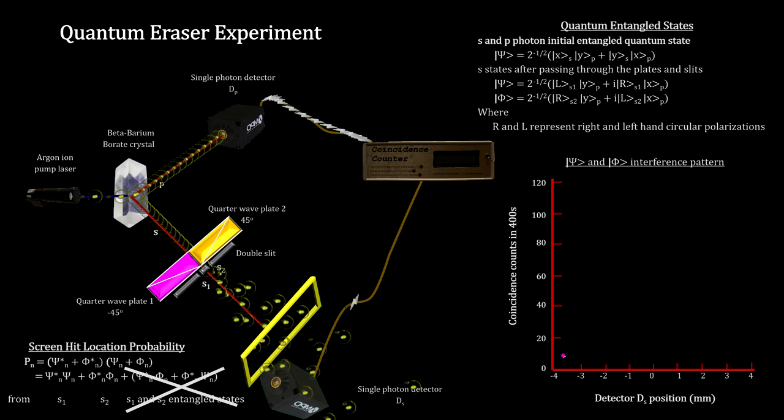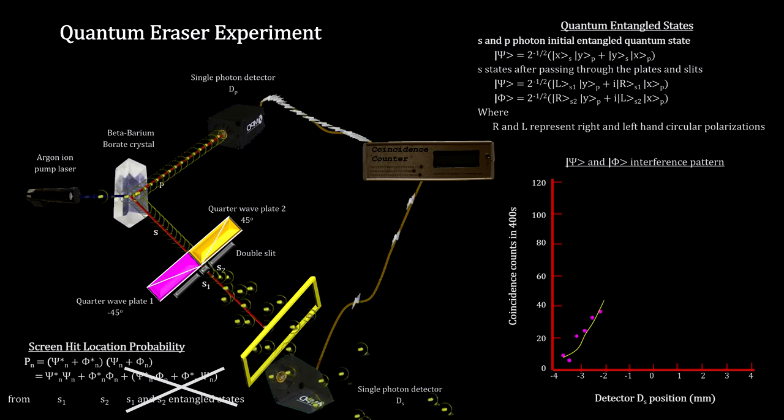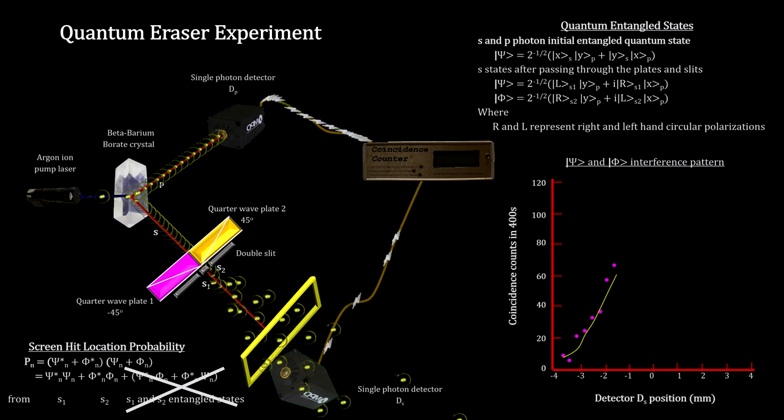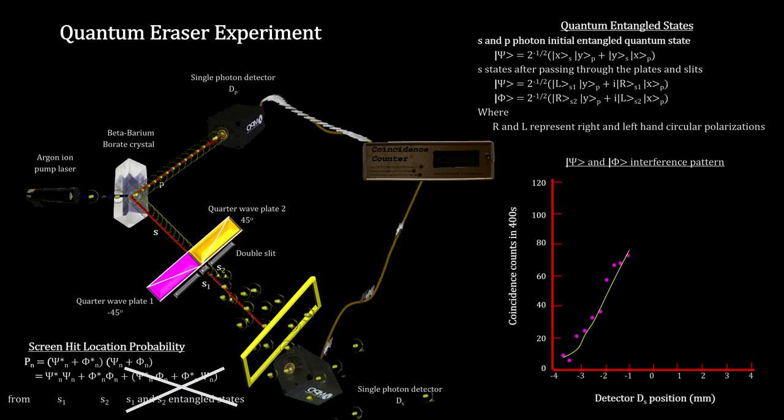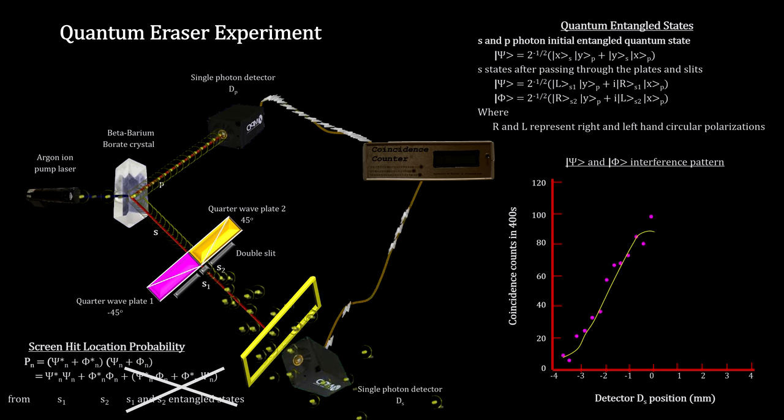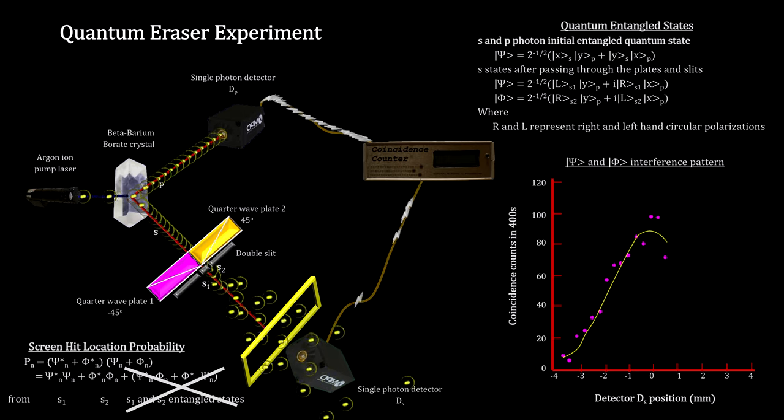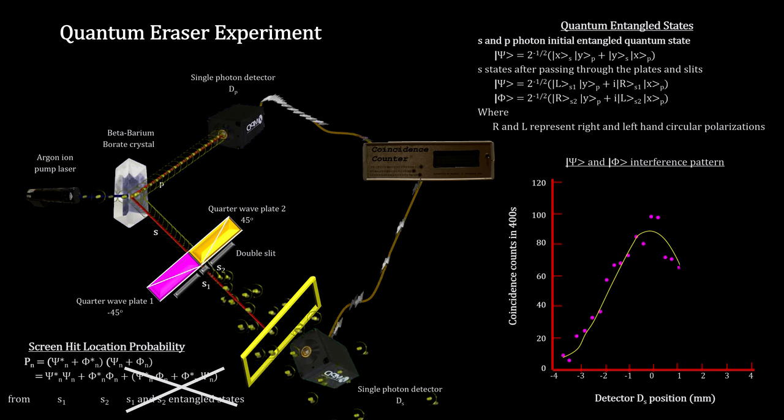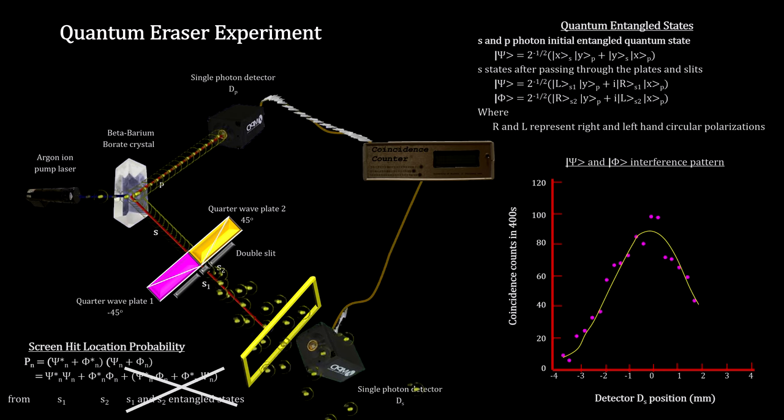Given the plus or minus 45-degree shifts created by the quarter-wave plates, the two superposition states cancel each other out. We are left with just the two particle-like probabilities. When the coincidence counts were tallied at each detector location, it was found that indeed the interference pattern was gone.